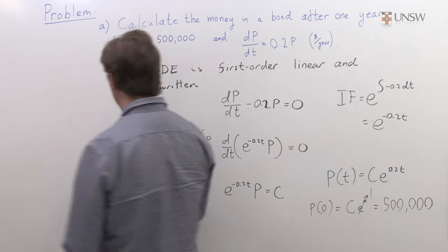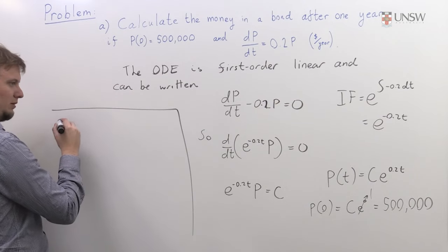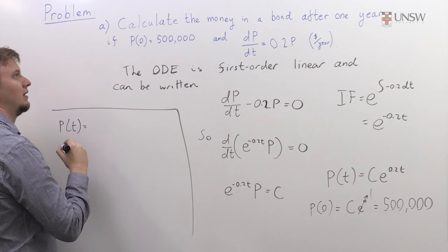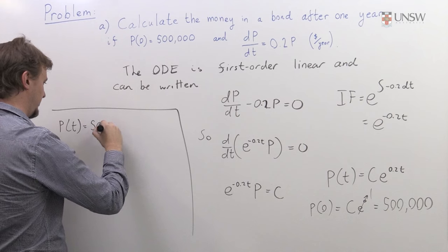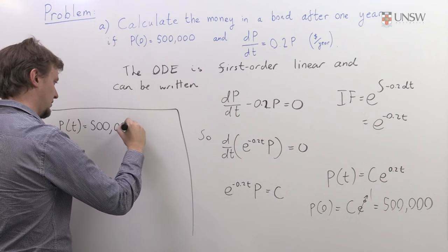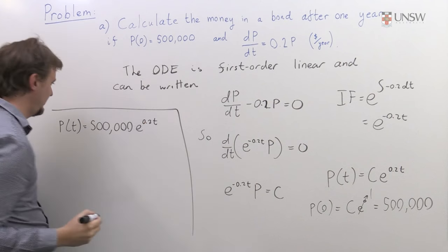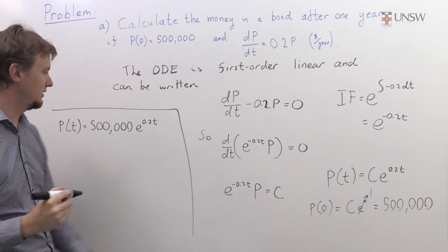Let's summarize our solution over here. For part A, we have P(t) equals half a million times e to the 0.2t, and we were told to work out the money in the bond after one year.